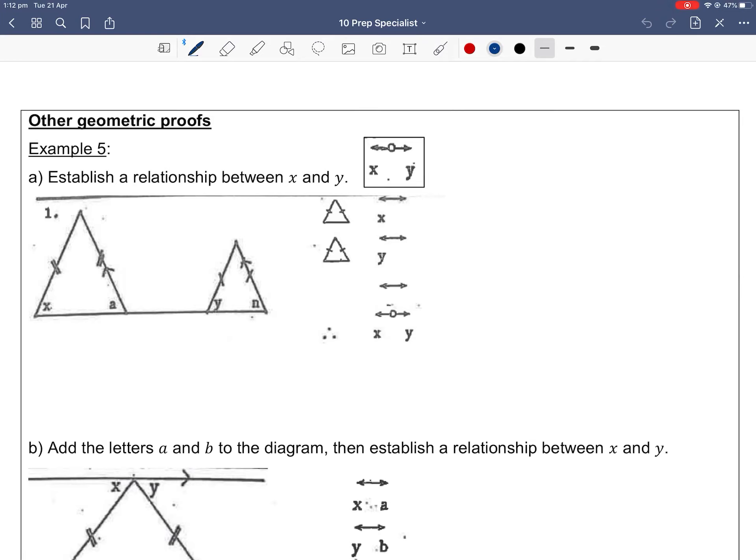For Example 5 it says here establish a relationship between x and y. So this word relationship in this textbook is demonstrated by this symbol, a circle with two arrows going left and right, and then you have the x and y underneath. So that's what this symbol means - this circle with the arrows just means to create a relationship between the two variables x and y.